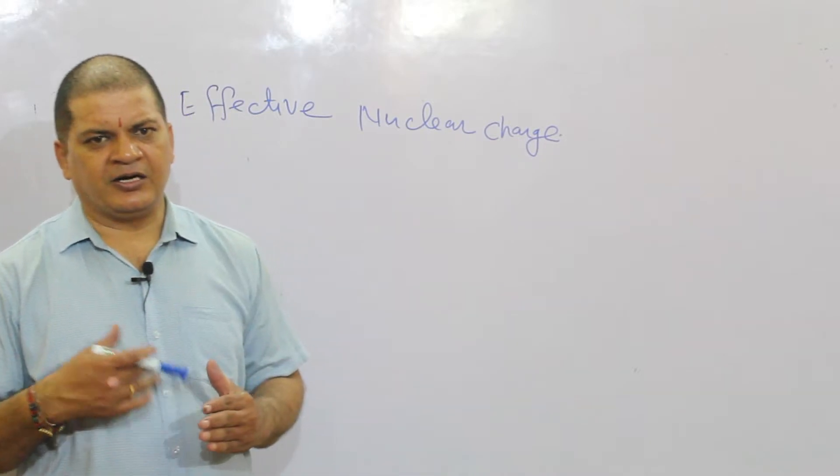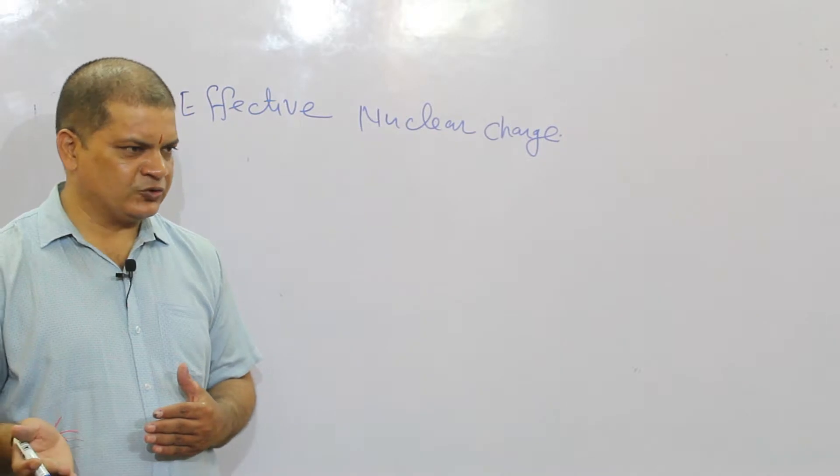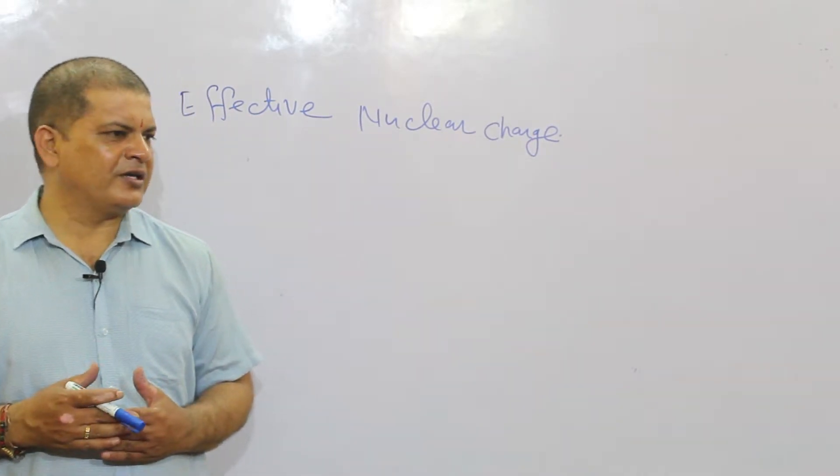If you have an ion or cation, you lose electrons. Protons are fixed. Protons are fixed.